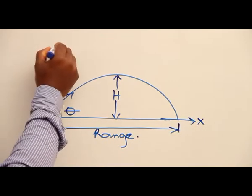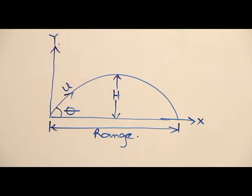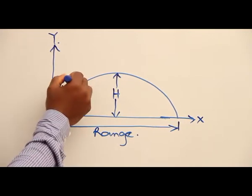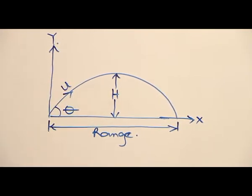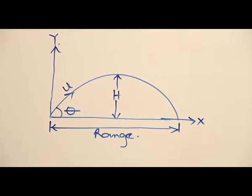This is the vertical axis. From this diagram, it's clear that the initial velocity has to be resolved because it's inclined at an angle.